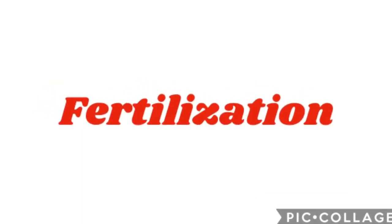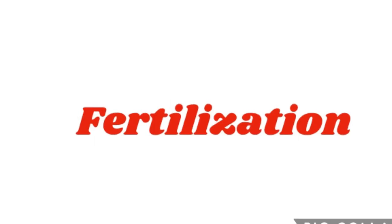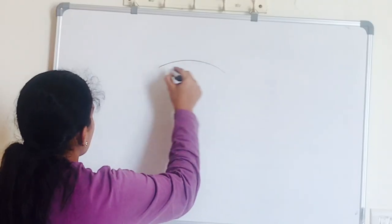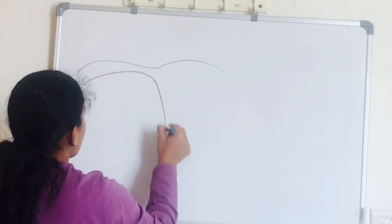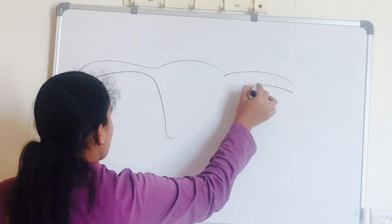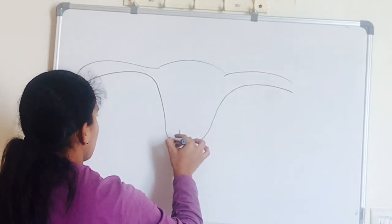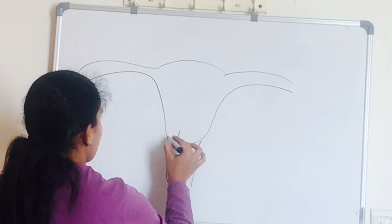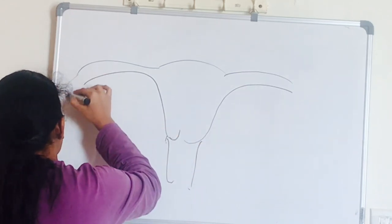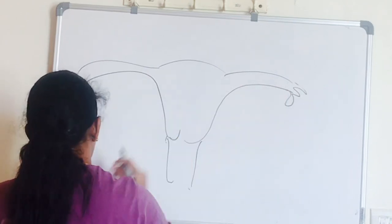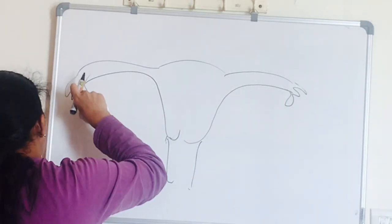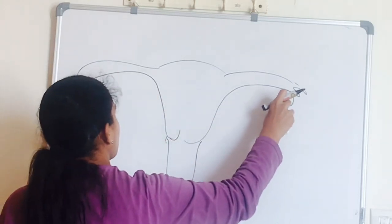Let us start with fertilization. We will see spermatogenesis and oogenesis later. So what is fertilization? The female pronucleus fuses with the male pronucleus. As a result of fertilization, the ovum completes its second meiotic division and the second polar body is formed.